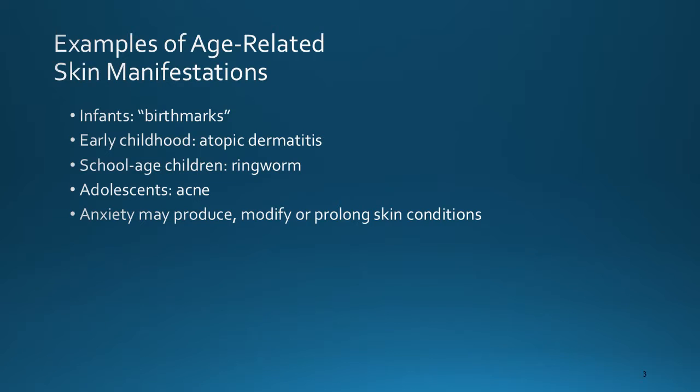Let's talk about some examples of age-related skin manifestations. In infants, we would see birthmarks. In early childhood, we often see atopic dermatitis. We often see ringworm with school-age children and acne with adolescents. We should also remember that anxiety may produce, prolong, or modify skin conditions.